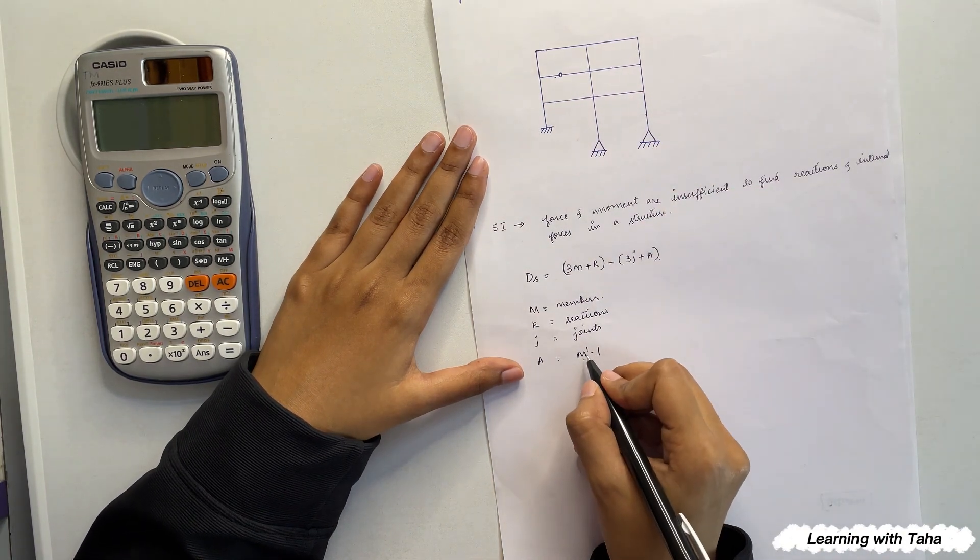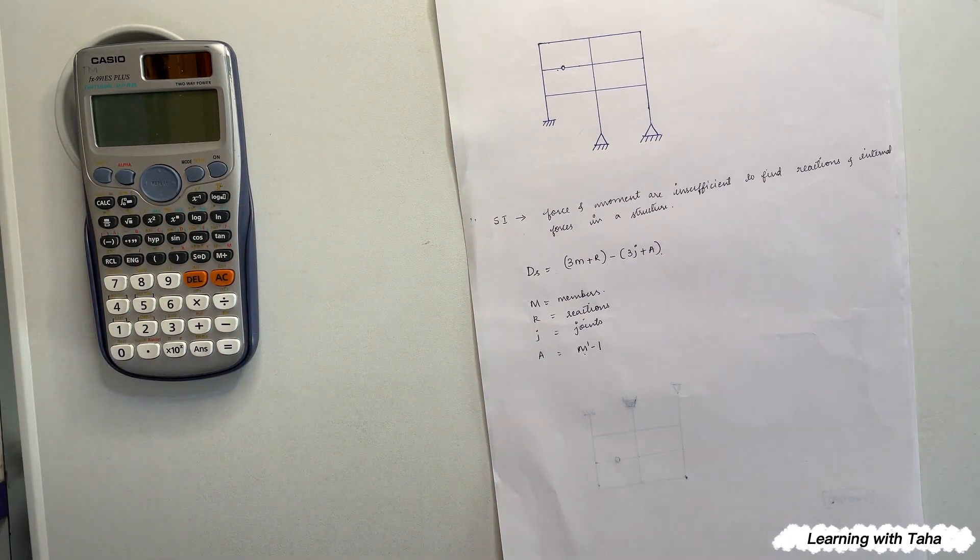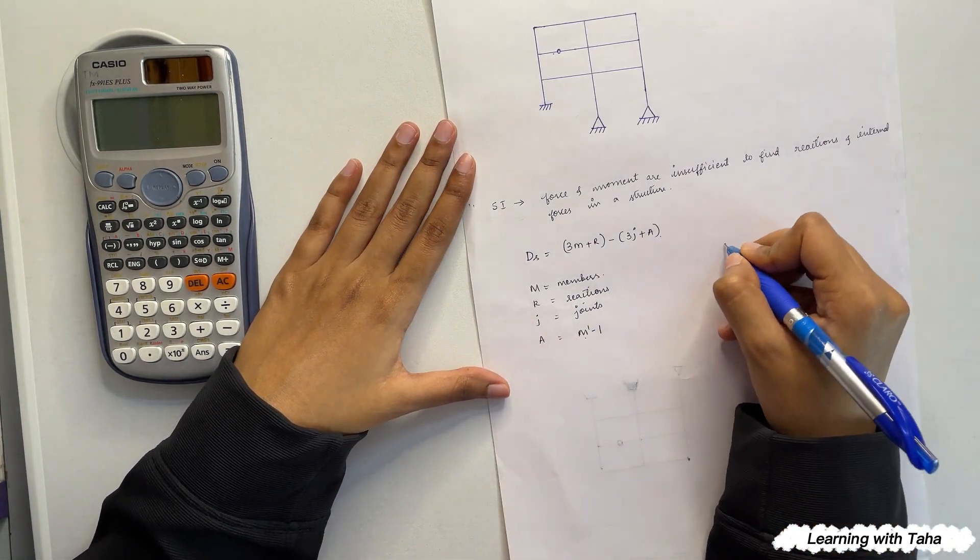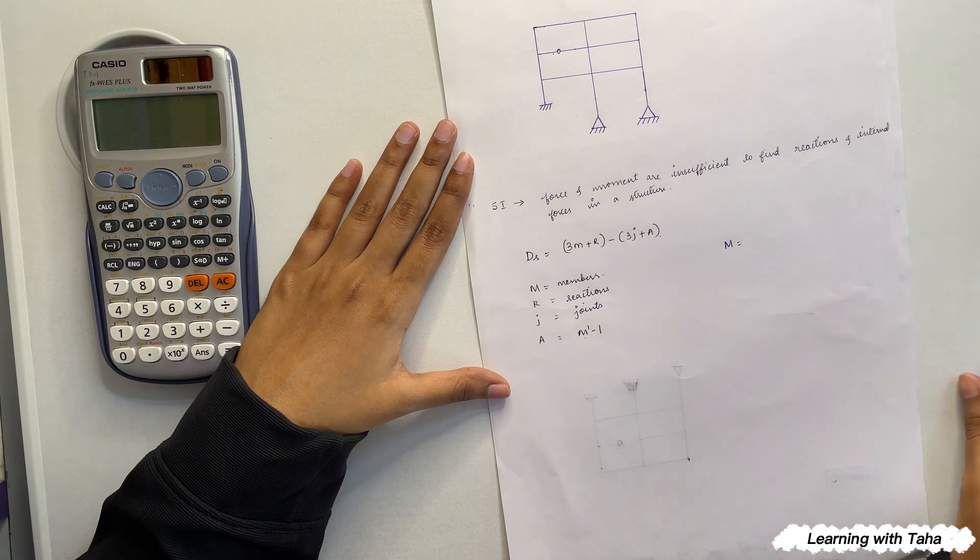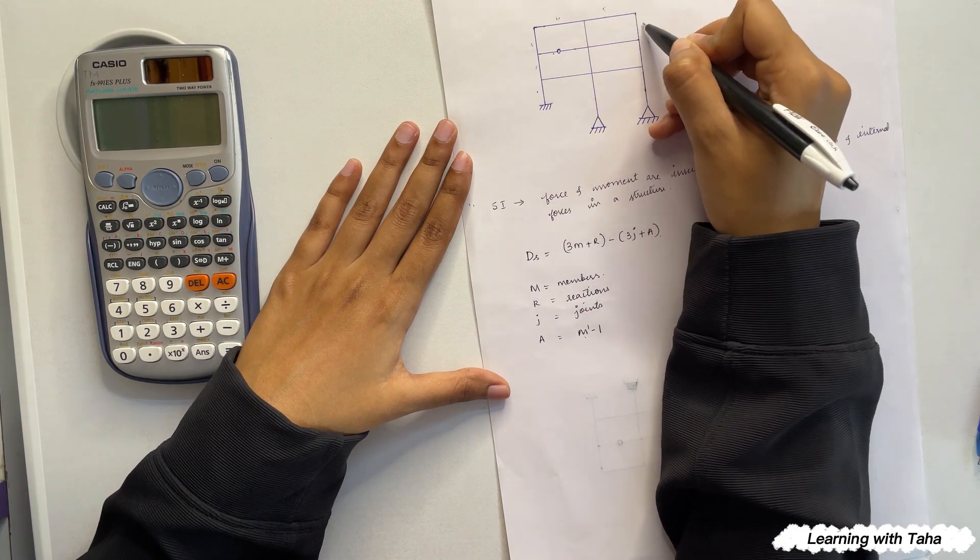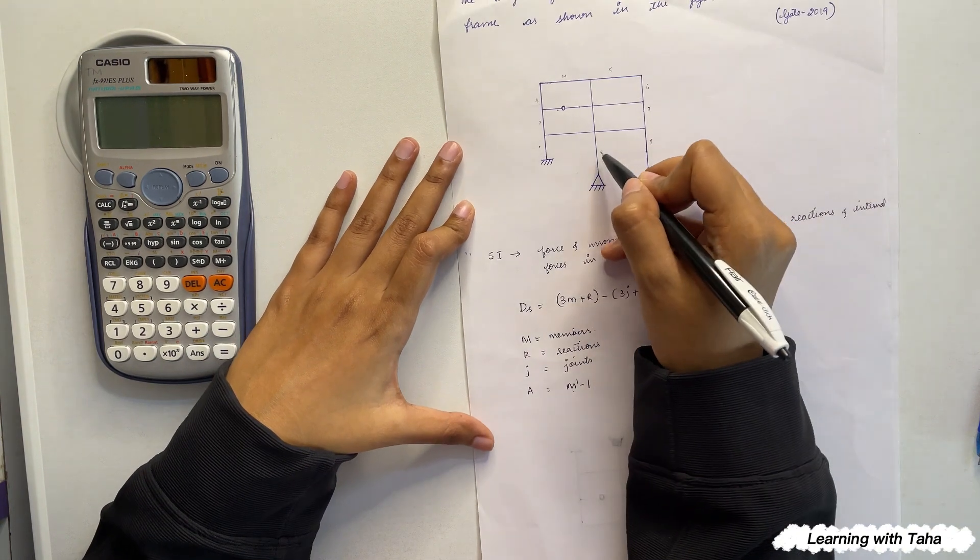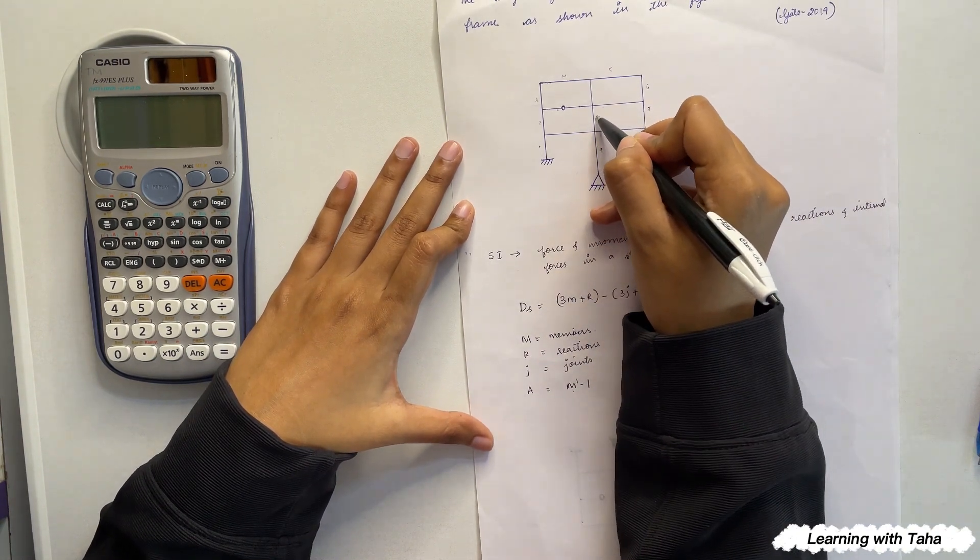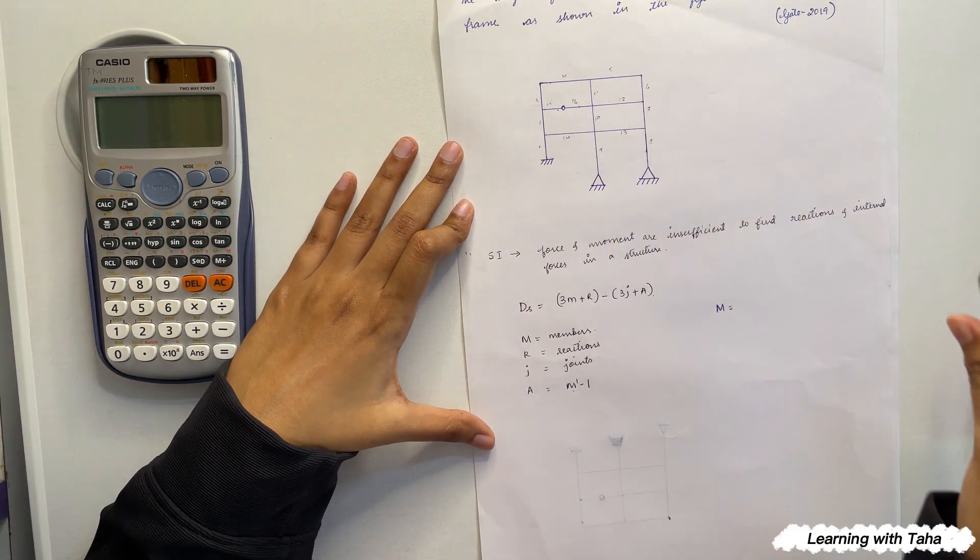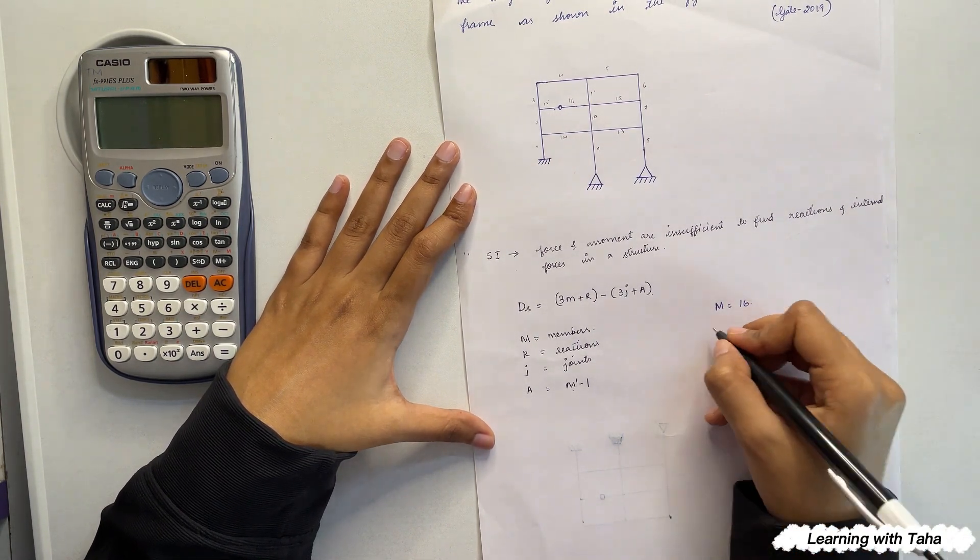So let us solve the equation now. Let us write the members first. So here how many members are there? We have one, two, three, four, five, six, seven, eight, nine, ten, eleven, twelve, thirteen, fourteen, fifteen, and sixteen. So the number of members are sixteen.